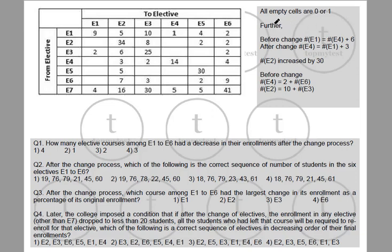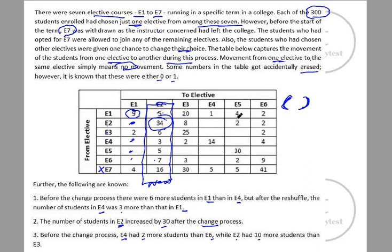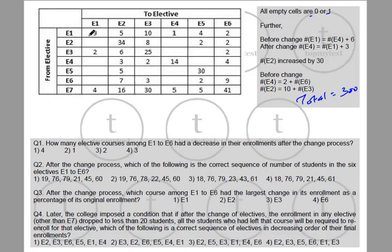All empty cells are zero or one, and the total is 300. If we take the row totals, e1 had 9 + 5 + 10 + 1 + 4 + 2 = 31 people before the movement. For e7, adding across the row gives 20 + 50 + 55 + 60 + 101 — wait, there are 101 people in e7 and they will all move to some other elective.